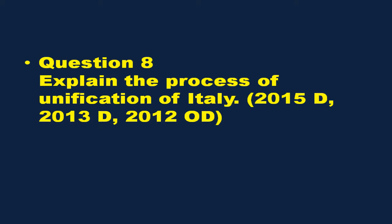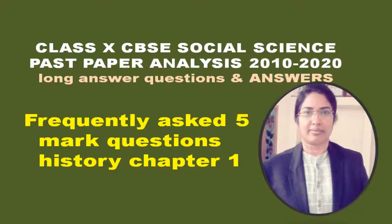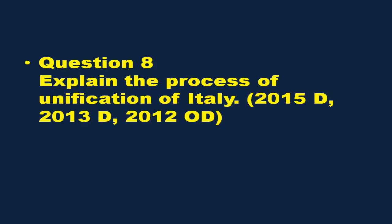Giuseppe Mazzini played an important role in the unification of Italy. He formed a secret society called Young Italy in Marseilles to spread his goals. He believed Italy could not continue to be a patchwork of small states and had to be forged into a single unified republic. During the 1830s, Mazzini sought to put together a coherent program for a unitary Italian republic.